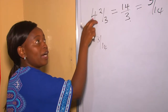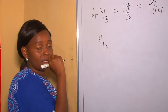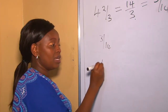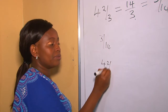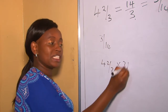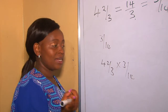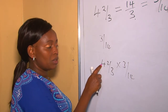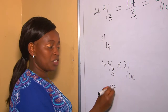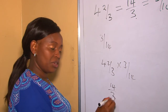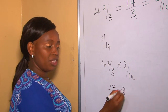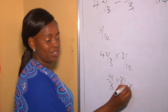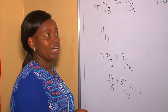We can prove this by multiplying the number by its reciprocal to see if we get one. Converting four and two over three to an improper fraction: twelve plus two is fourteen over three. Multiplied by three over fourteen — cross multiplying, we get one. That proves that three over fourteen is the reciprocal of four and two over three.